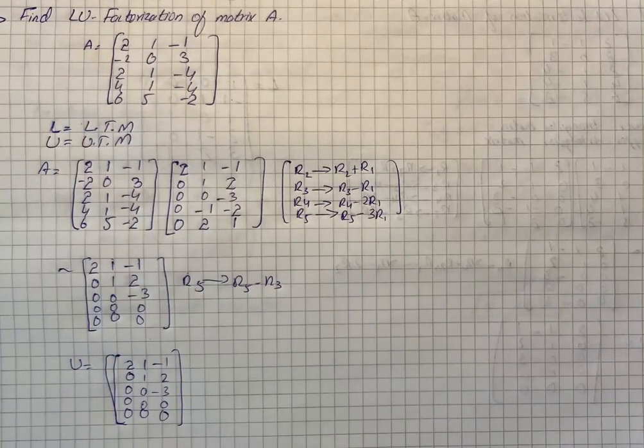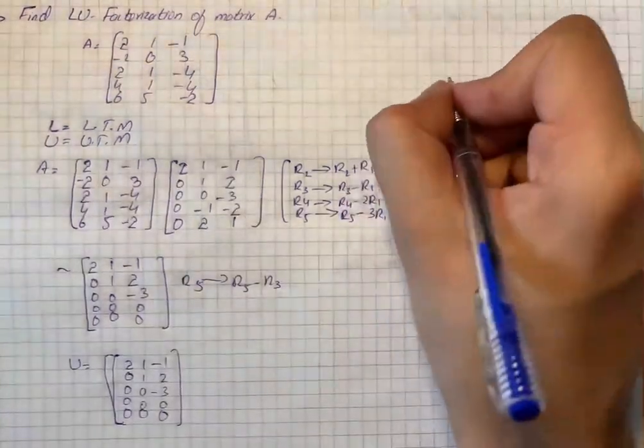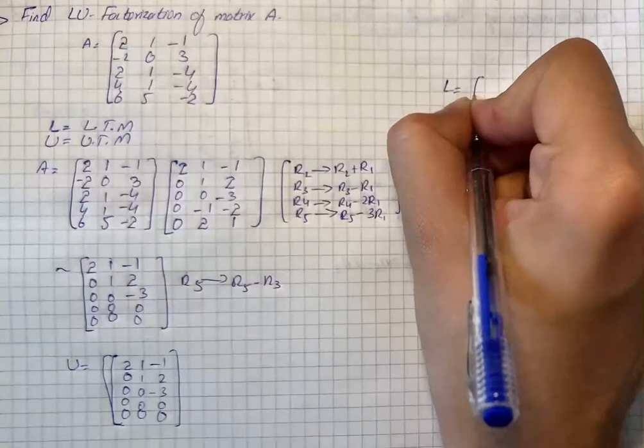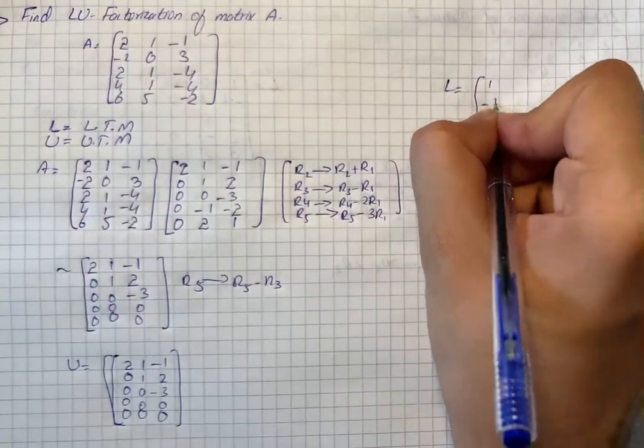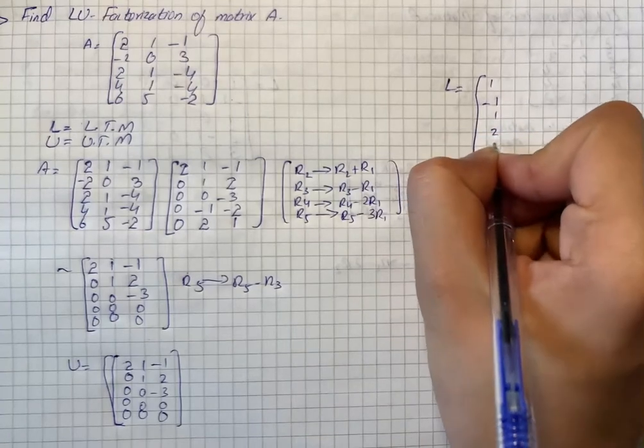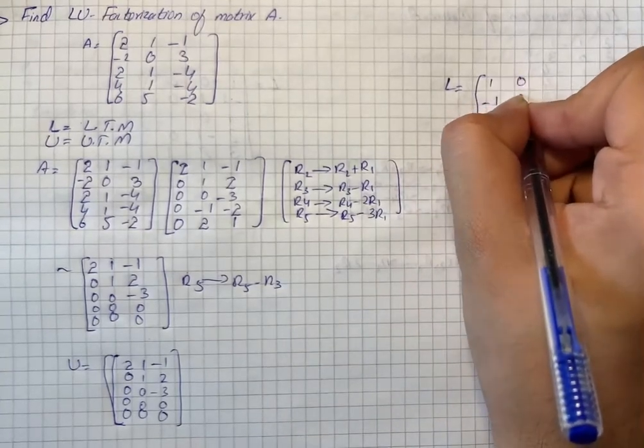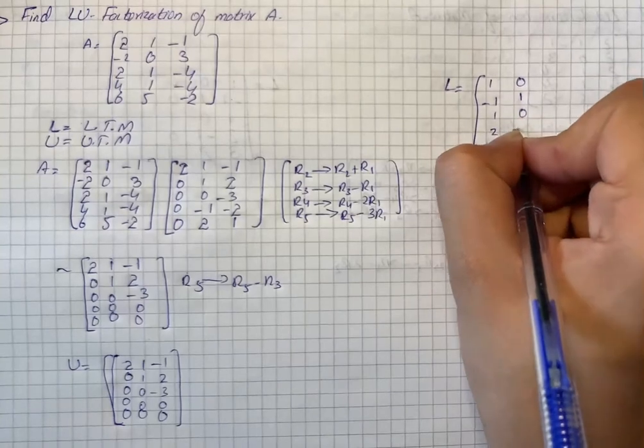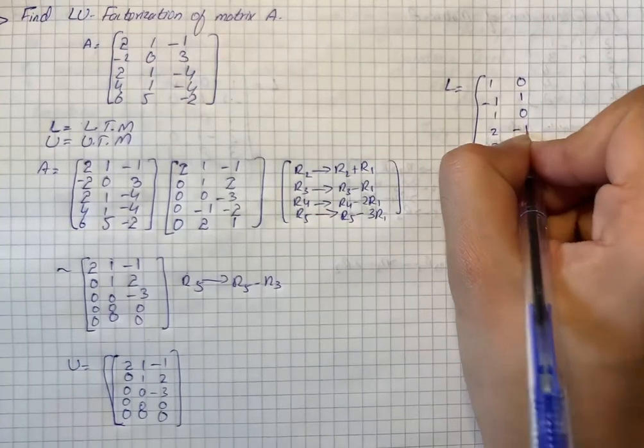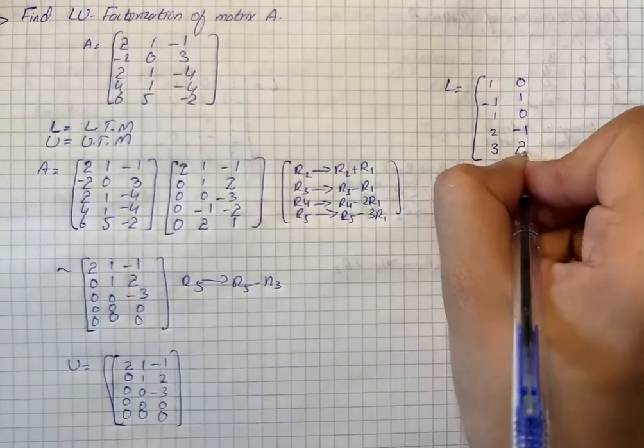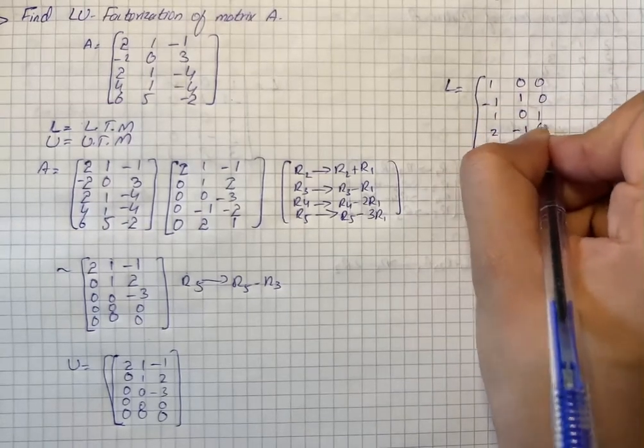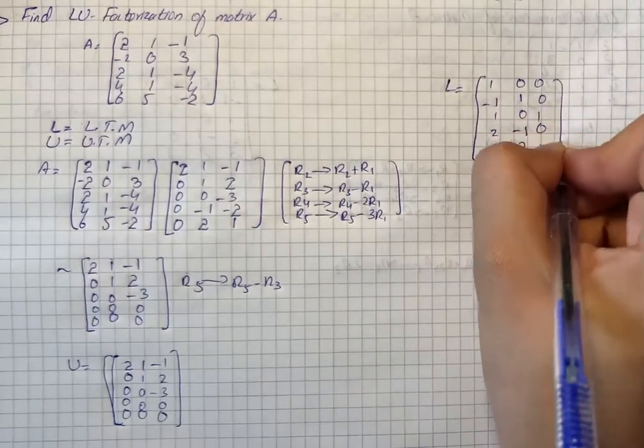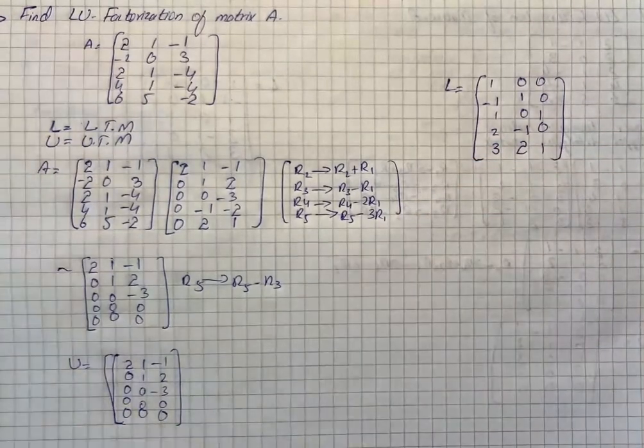Finally the lower triangle matrix L is calculated by the entries and the numbers in the operations respectively. We can write that L is equal to 1, minus 1, 1, 2, 3; 0, 1, 0, minus 1, 2; 0, 0, 0, 1, 0, 1. That is our solution for the given matrix.